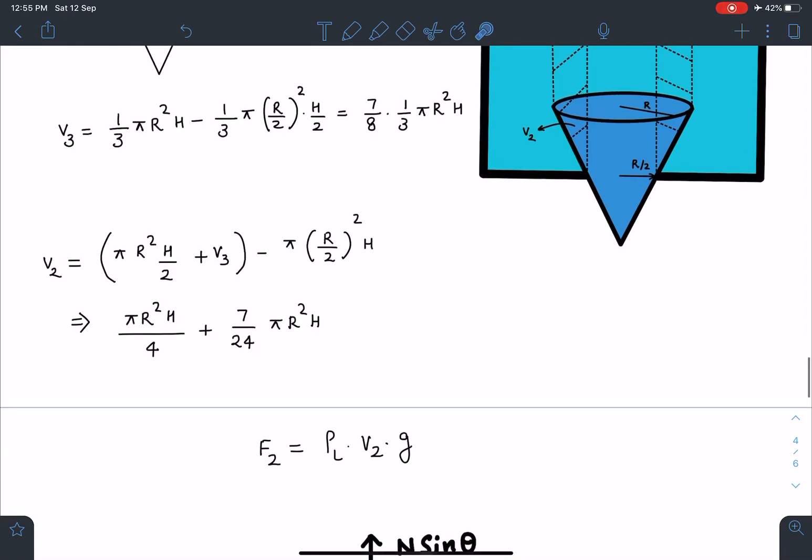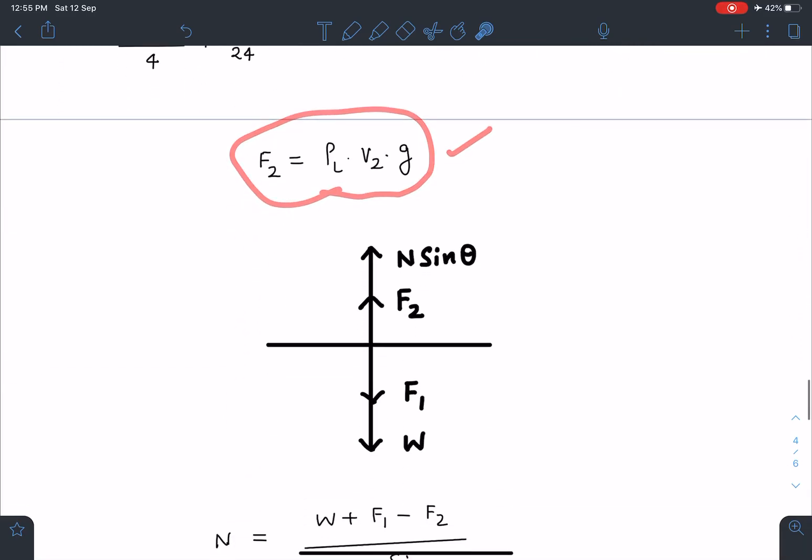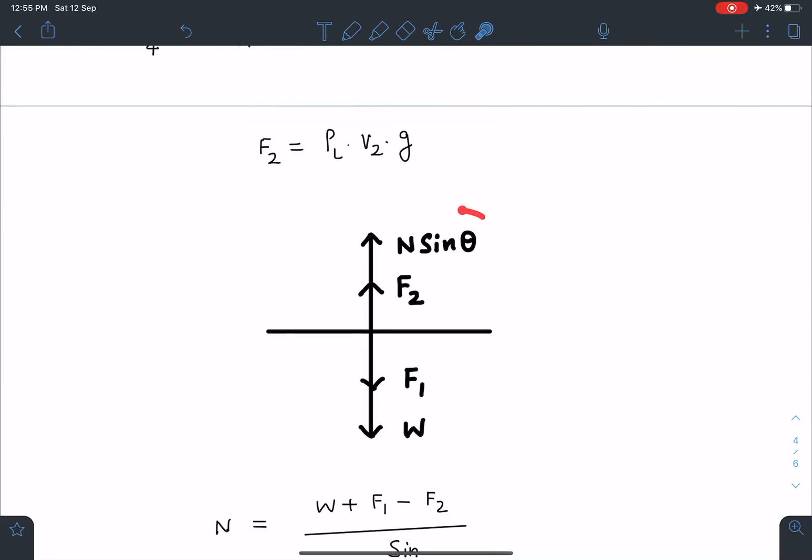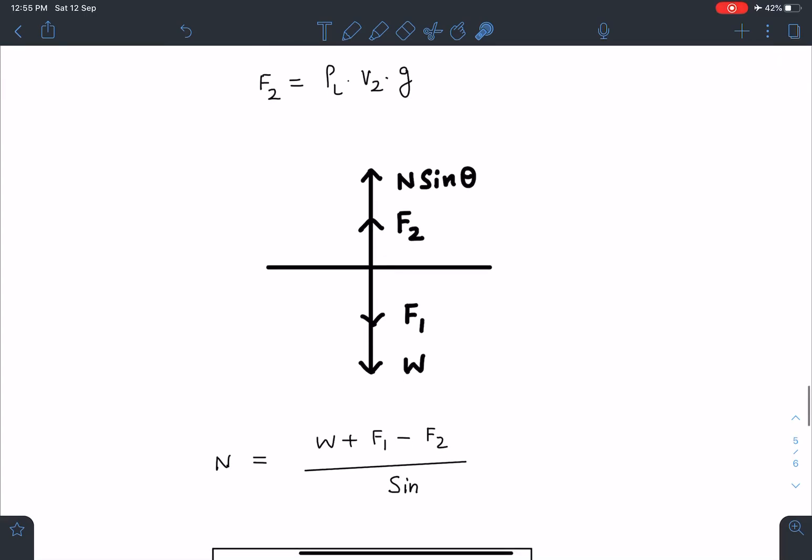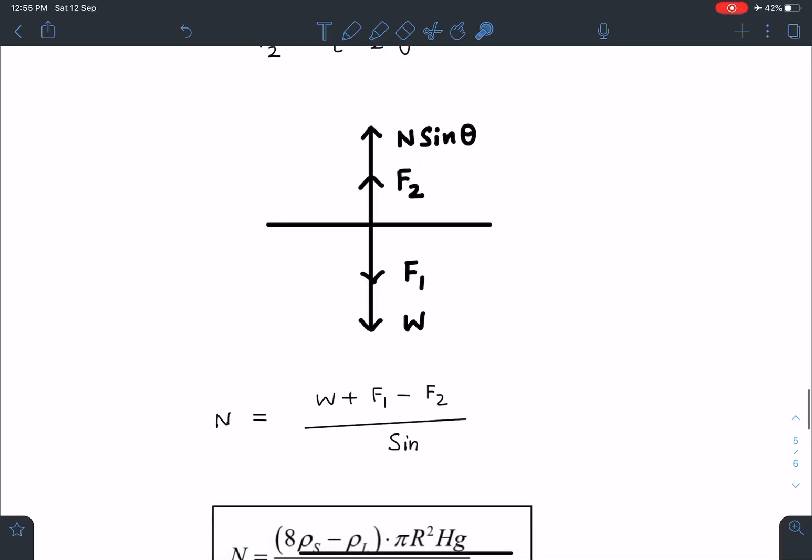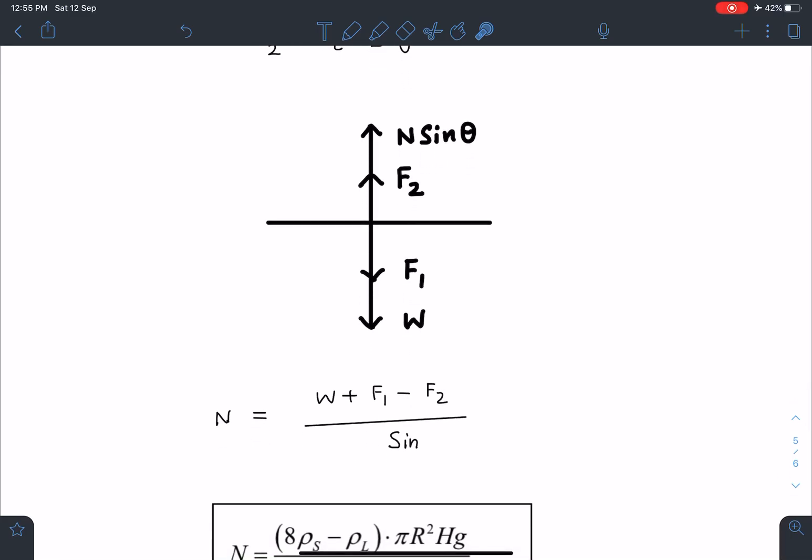So now I can write this: F2 is equal to rho liquid V2 into g. Now I can use this free body diagram of the cone, and when I substitute the values. Again, I have skipped the calculation part. If I substitute the values of W, F1, F2, and divided by, this is going to be sin theta, by the way, here it's going to be sin theta here.